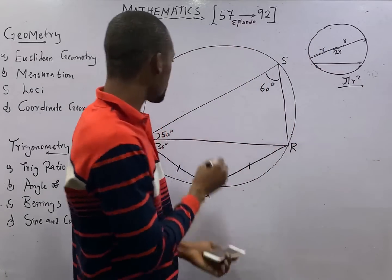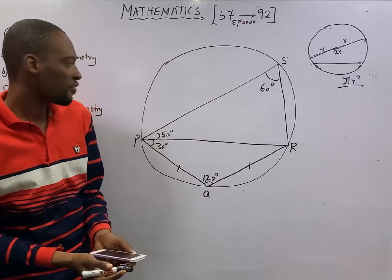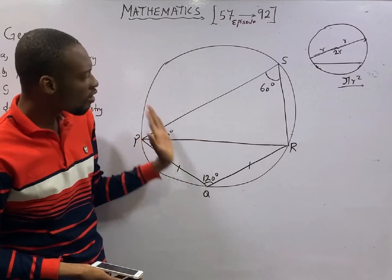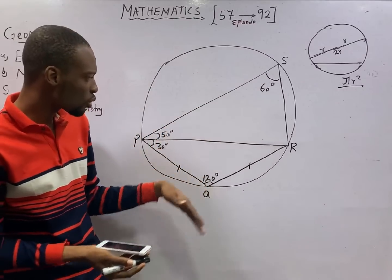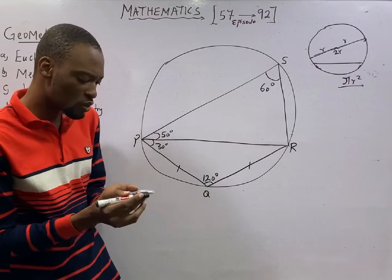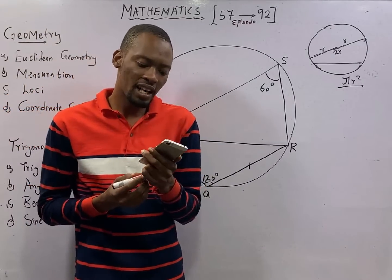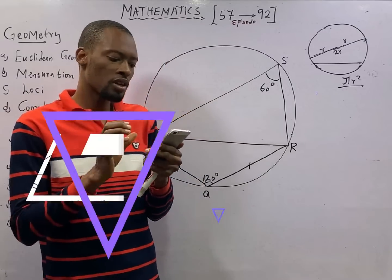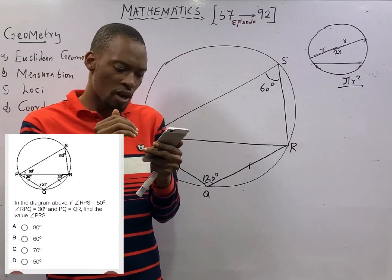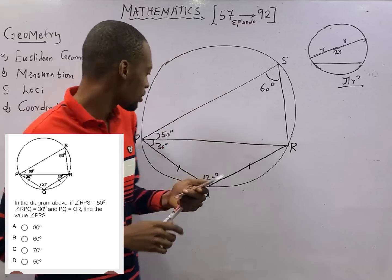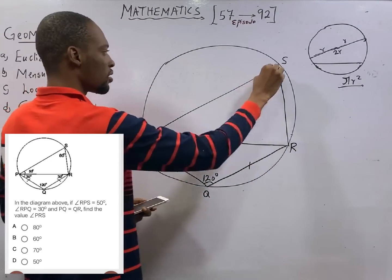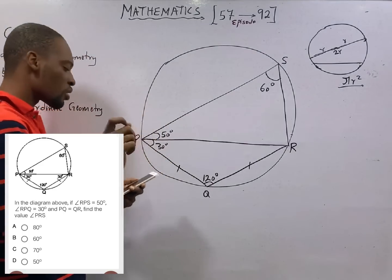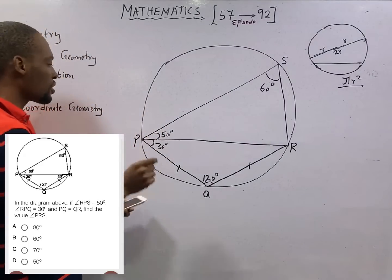Now, look at this. We have a circle and various triangles inside the circle. Now, let's see the question. In the diagram above, if angle RPS is 50 degrees, this is RPS. This shape is RPS. The letter at the middle is where the angle is always at. So, the angle will be at P.